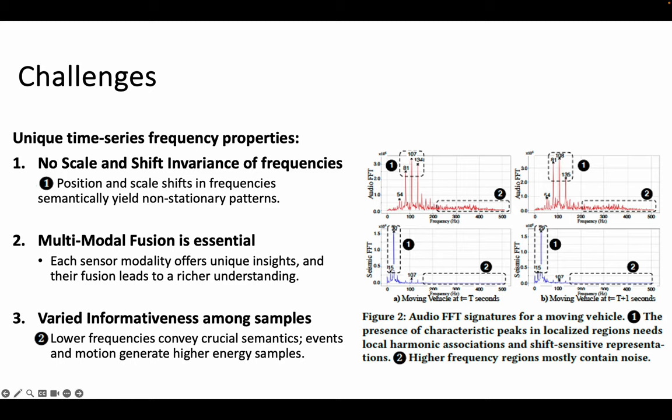We note three unique properties of time-series data from a frequency domain perspective. First, the scales and locations of the frequency content in a time-series are crucial, as peak characteristics provide specific information about the event.